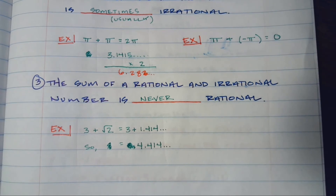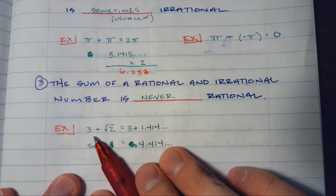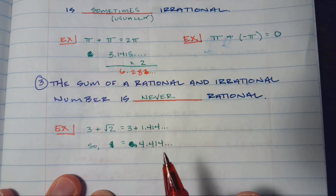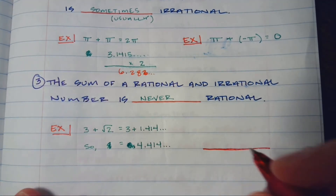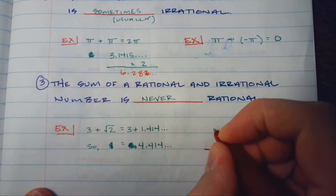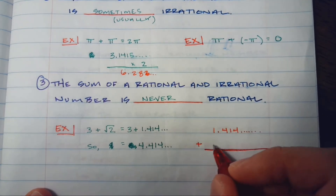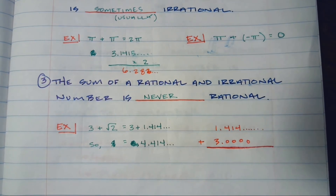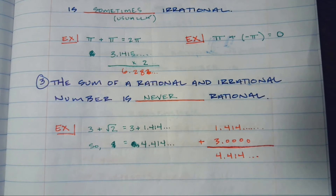Last statement on this page: the sum of a rational and irrational number is never rational. Basically, 3 plus √2 is going to give you 3 plus 1.414..., and it's going to go on and on and on. That becomes really obvious when you set it up like a traditional addition problem. If we take 1.414... going into infinity and add 3 to it — that's the same as 3.000... — this just becomes 4.414... into infinity. It doesn't suddenly stop because you added a 3 to it.